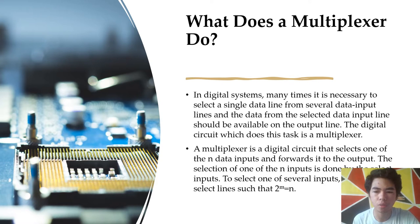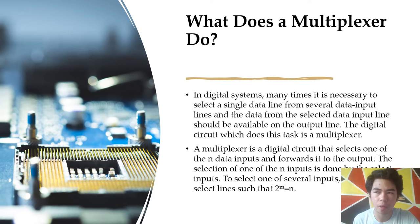What does a multiplexer do? In a system, it is often necessary to select a single data line from several data input lines, and the data from the selected input line should be available at the output line. A multiplexer is a digital circuit that selects one of N data inputs — where N can be 2, 4, 8, and so on. The selection of one of the N inputs is done by select inputs.